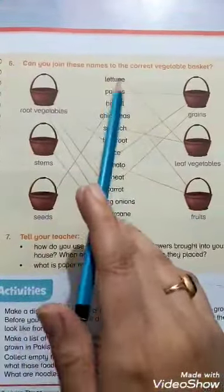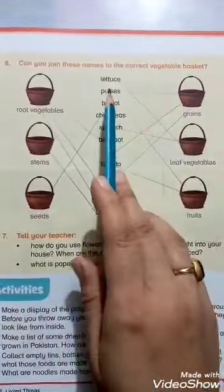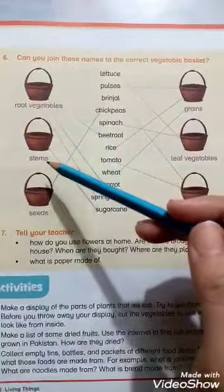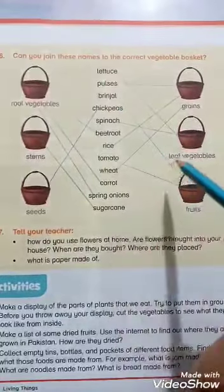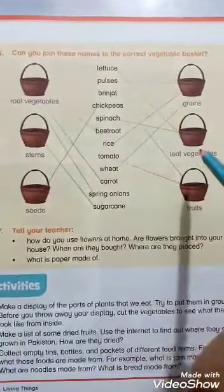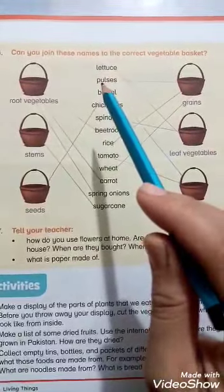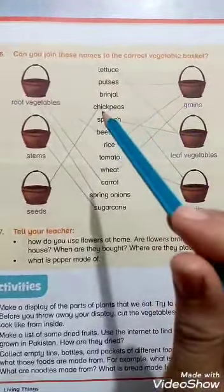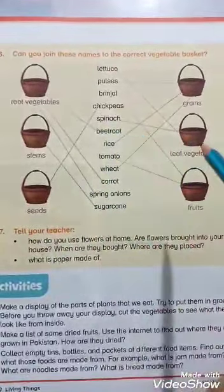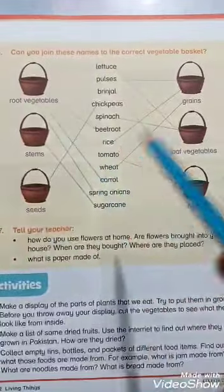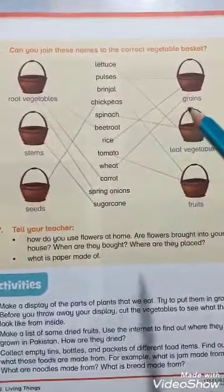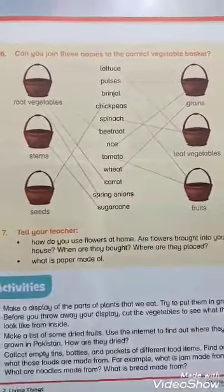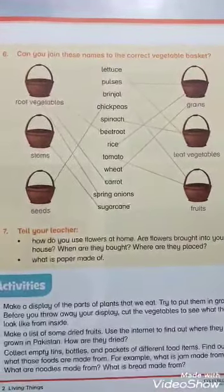Can you join these names to the correct vegetable basket? The six baskets are: grain, leaf vegetables, fruits, root vegetables, stem, and seeds. Lettuce is a leaf vegetable. Pulses — daal hoon ko — match with seeds. Brinjal is a fruit. Chickpeas — chenye ki daal — is a seed. Spinach — leaf vegetable. Beetroot — root. Rice — grain. Tomato — fruit. Wheat is a grain. Carrot — root. Spring onion — root. And sugarcane is the stem. Hope this video is very helpful for your revision, thank you.